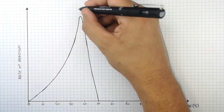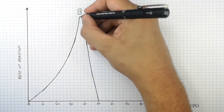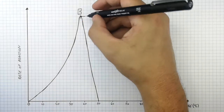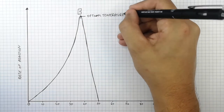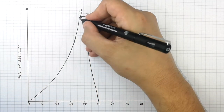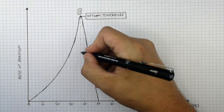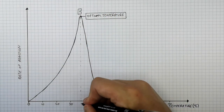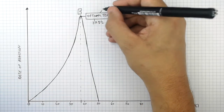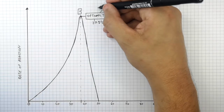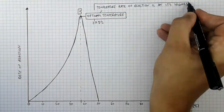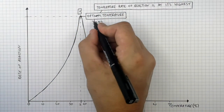This point here is where the enzyme is working at its fastest rate. This is the optimum temperature, where the rate of reaction is at its highest — 37.5 degrees Celsius. The optimum temperature, which is 37.5 degrees Celsius, is the temperature where the rate of reaction is at its highest.